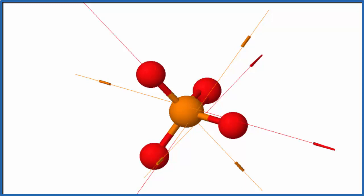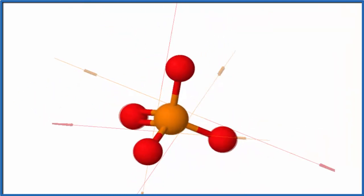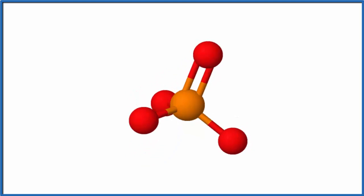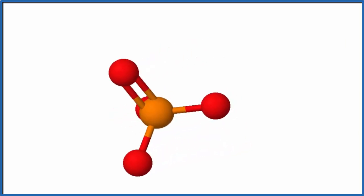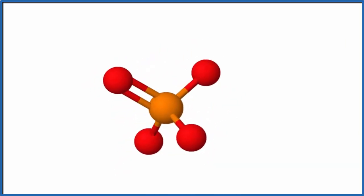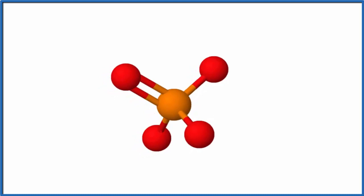But if we look at the overall dipole for the phosphate ion, there isn't one. That's because all of those individual dipoles are pointing in opposite directions and cancel out. So even though we have dipole moments on each bond, overall there's no dipole for the ion. That means this is a nonpolar ion.